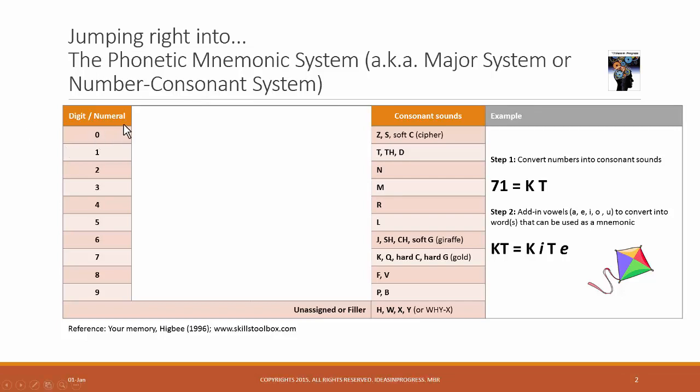In the Phonetic System, each of the digits 0 to 9 are assigned a consonant sound or a code. So for example, the digit 2 is assigned the consonant sound N, and digit 8 is assigned the consonant sound F.